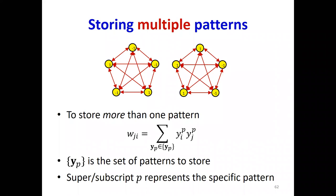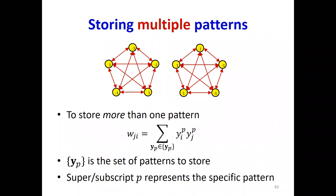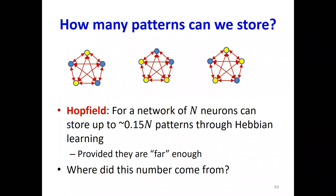That works if you're trying to store only one pattern. If you want to store more than one pattern, you use the same Hebbian learning rule except you compute the weights for each of the patterns and then sum them all up — summing this product over all the patterns you're trying to store. When you do this, how many patterns can you store? Under some conditions, you can show that for an n-neuron network you can store up to 0.15n patterns through Hebbian learning.